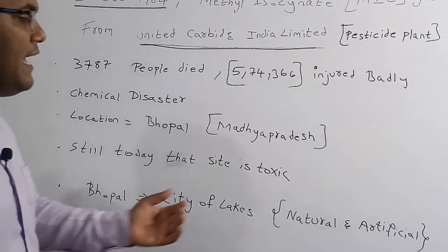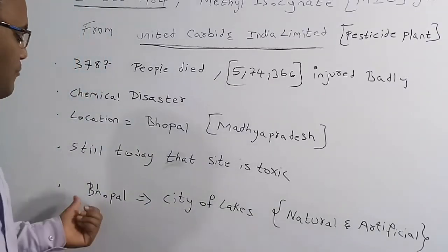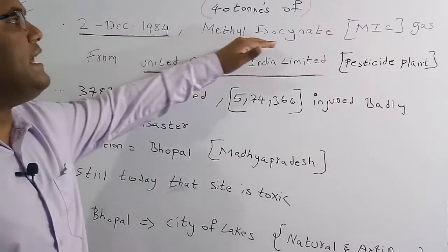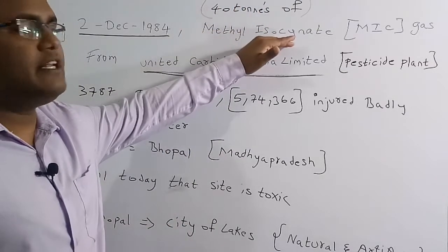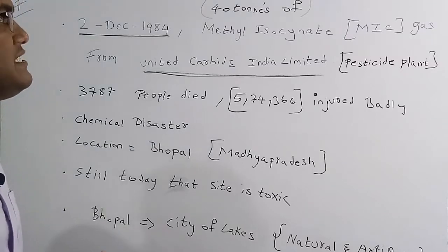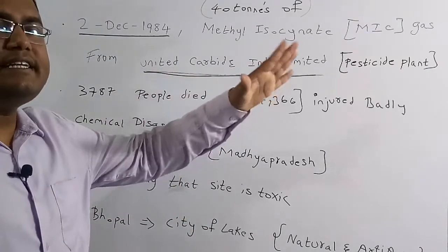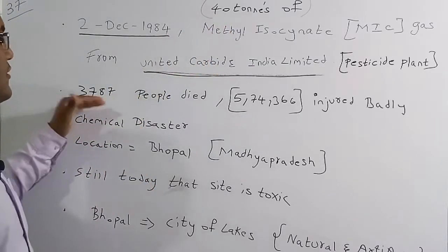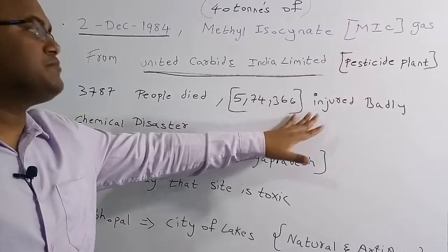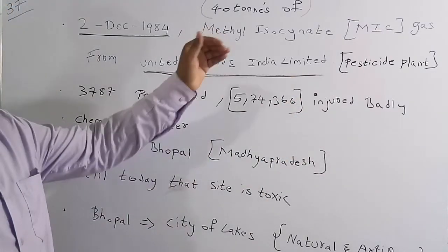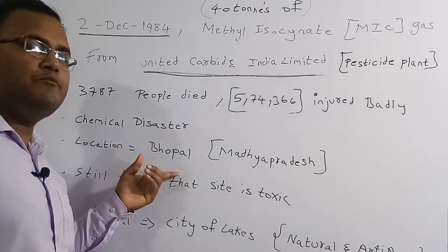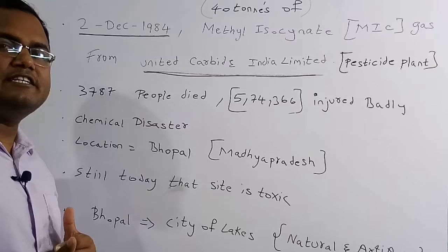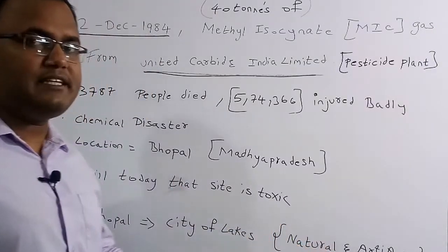Bhopal is also called the City of Lakes because of its natural and artificial lakes. The most frequently exam-asked facts are: the gas is Methyl Isocyanate, 40 tons leaked from Union Carbide India Limited (a pesticide plant), the date was 2nd December 1984, 3,787 people died, 574,366 were injured, it is a chemical disaster, and the plant is in Bhopal, Madhya Pradesh.